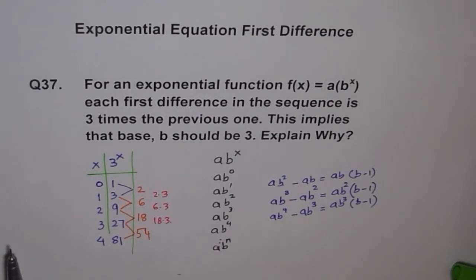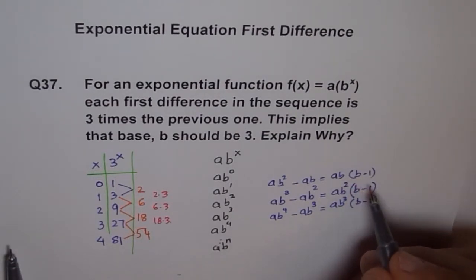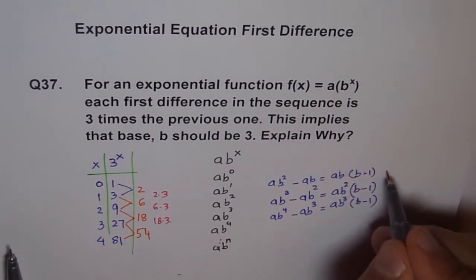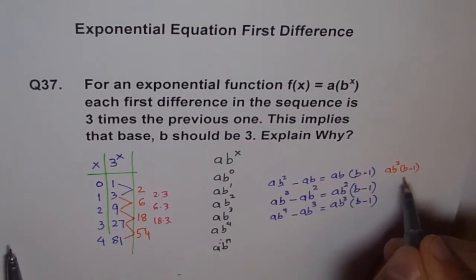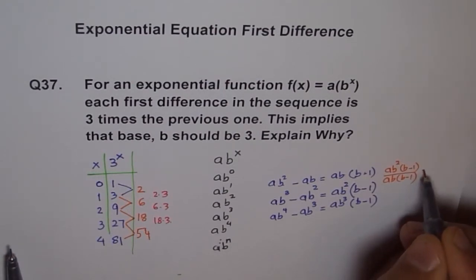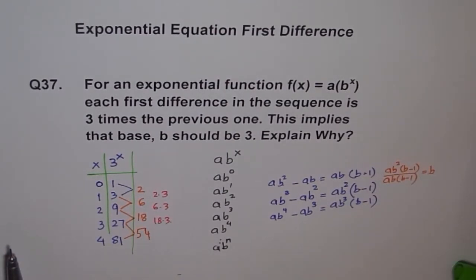Now if I divide this by this, then what happens? If I divide this by this, that is, I am saying ab square times b minus 1 divided by ab times b minus 1, what happens? I get b, I get b. Again, this is a different thing for that difference. Here it is ab cube, so I will divide ab cube times b minus 1 divided by ab square times b minus 1, what do I get? a will cancel out, b minus 1 will cancel out, this is b cube and this is b square, and left with b.